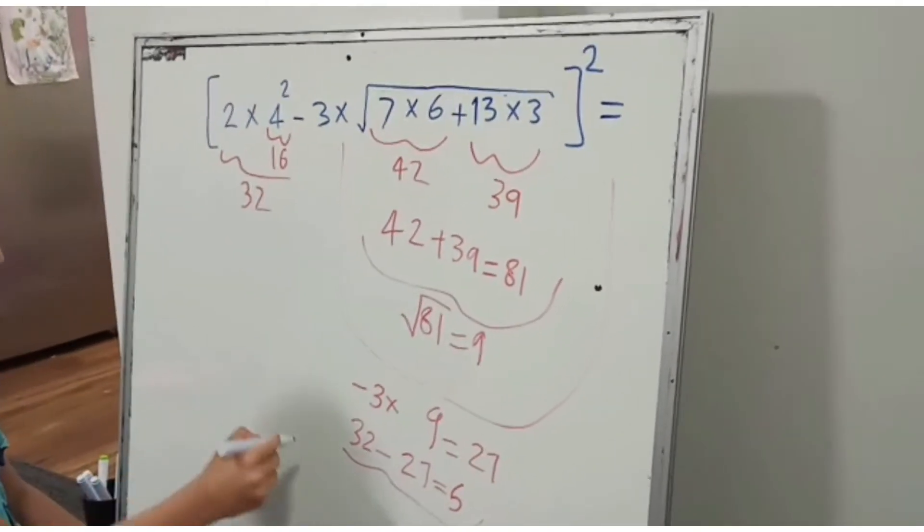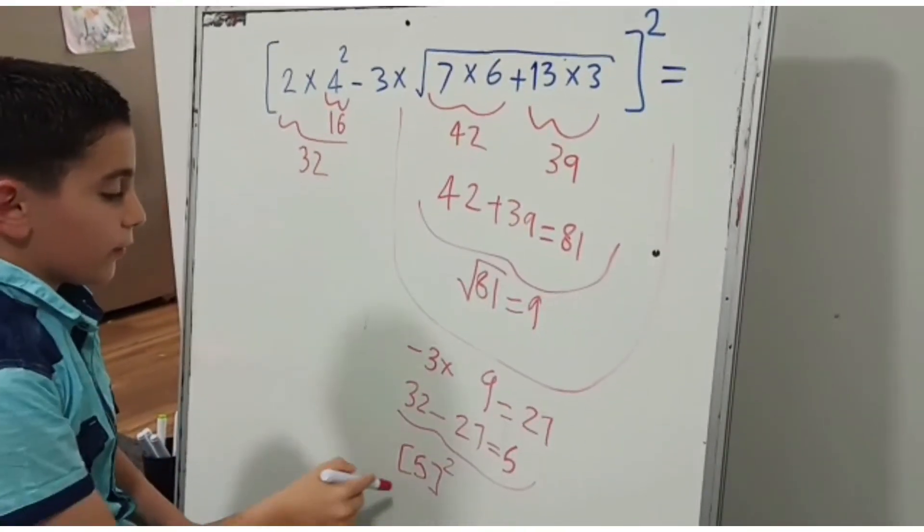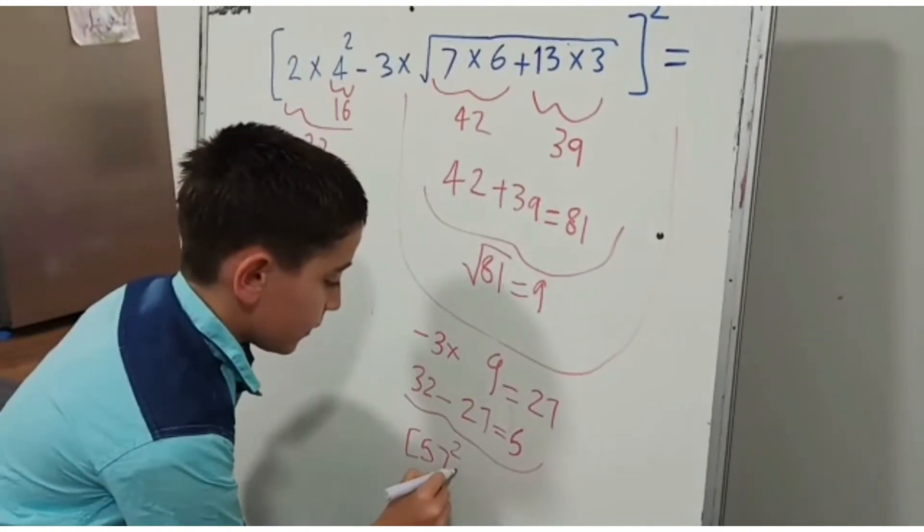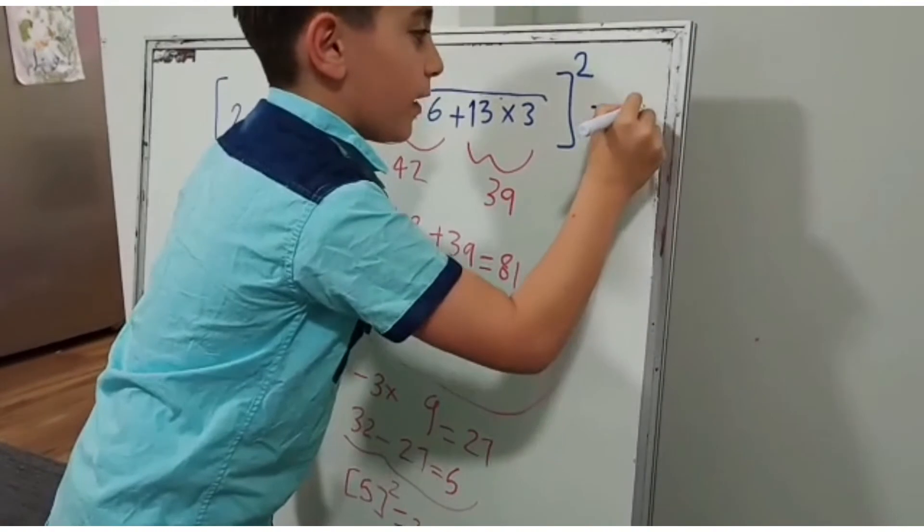Now the final answer we got is 5. We won't forget the square. So 5 squared is 25, which equals 25. So the answer over here is 25.